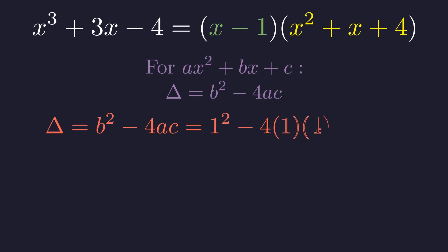For the quadratic x squared plus x plus 4, the discriminant is b squared minus 4ac, which gives us 1 minus 16, or negative 15. A negative discriminant means this quadratic has no real solutions, only complex ones.